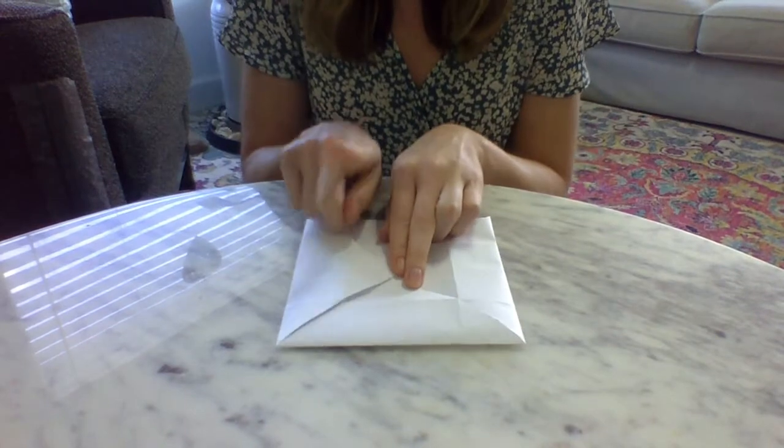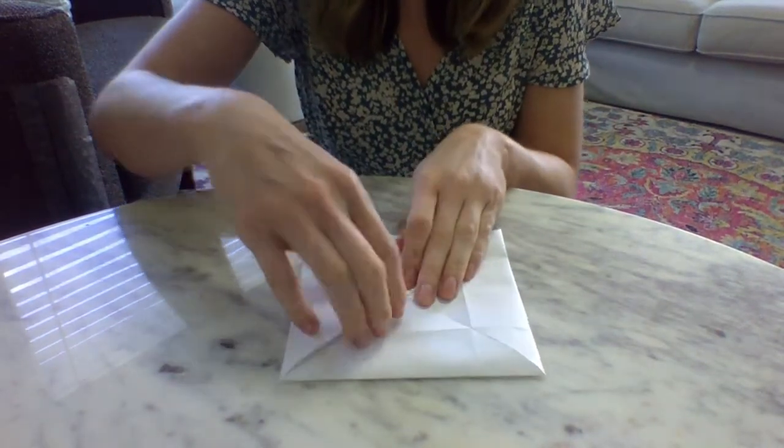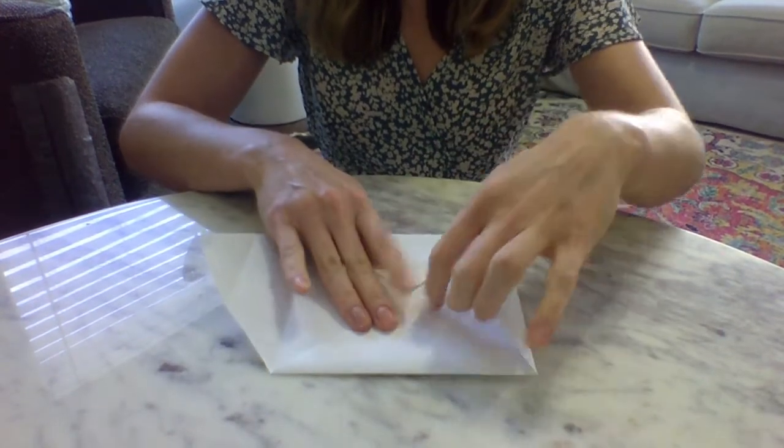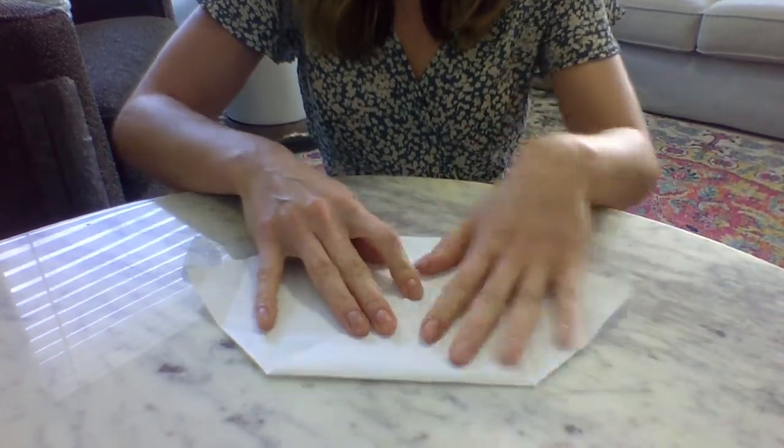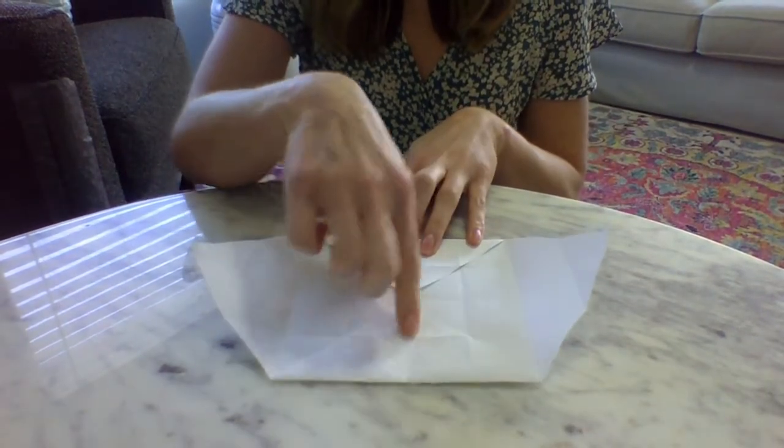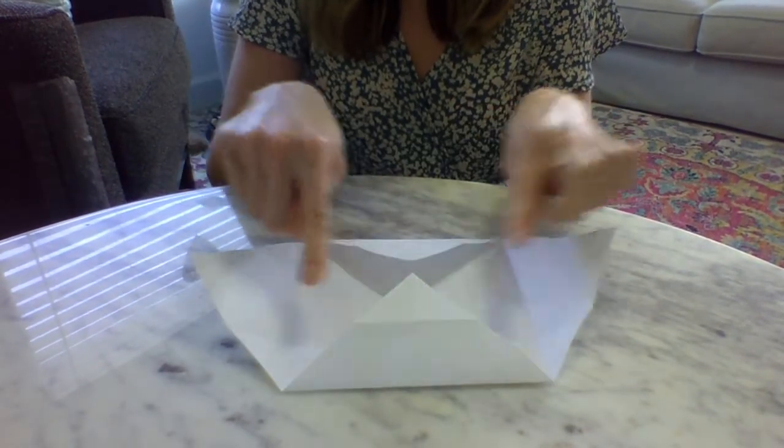Now, this part gets a little tricky so pay attention. Open up two of the triangles that are opposite of each other. Two of the triangles are coming in and two have been opened up.